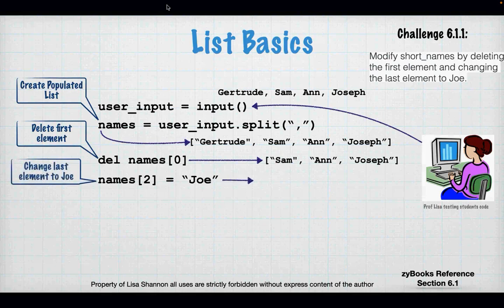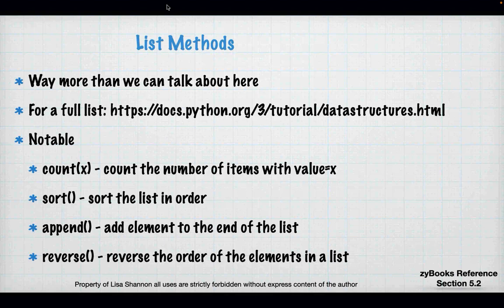Now updating: to change Joseph to Joe, we use 'names[2]' — index zero is Sam, one is Ann, two is Joseph — and assign 'Joe'. So we go from Joseph to Joe.